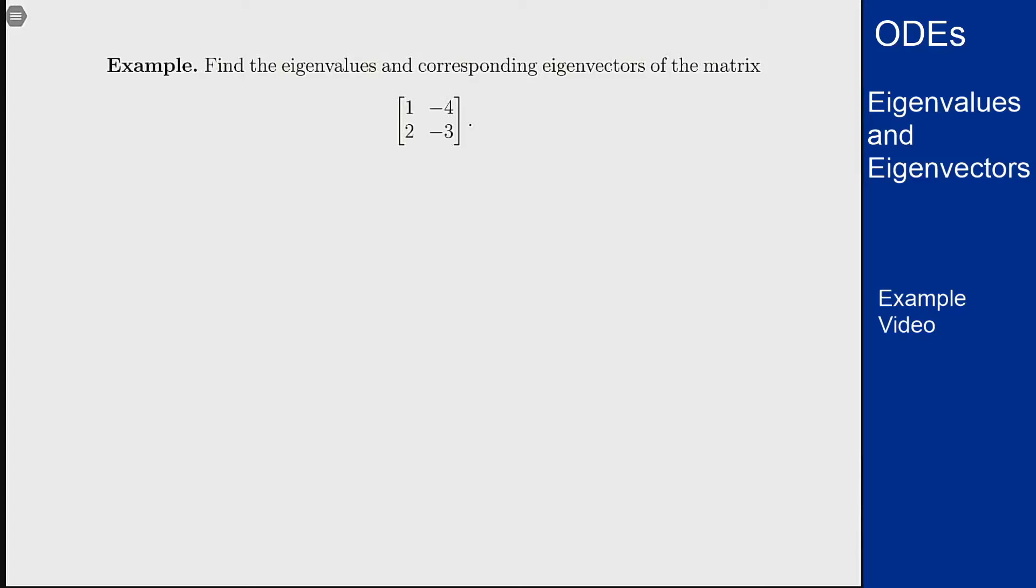In this video we want to showcase the process of finding complex eigenvalues and eigenvectors for a given matrix. We have the matrix here 1 minus 4, 2 minus 3. We want to go about finding its eigenvalues to then go on to find the eigenvectors from there.